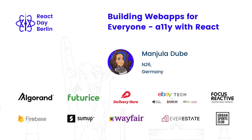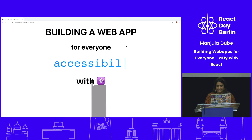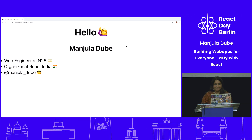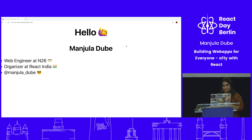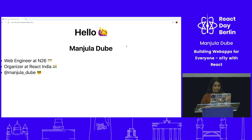Today I'm going to be talking about building web apps for everyone, which means it should be accessible. A quick introduction about myself — I'm a web engineer at N26, and we really care about accessibility a lot. That's why I'm here today. I'm also one of the organizers at React India, and you can find me on Twitter at manjula__dubay if you want to follow me.